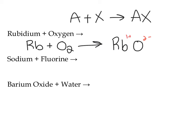So I want to cross those charges: that two goes down here, and that one goes over here. I don't need to write the one, and that's my formula. Now once I have the formulas written, I just want to balance the equation. I have one rubidium and two rubidiums, and two oxygens and one oxygen, so I put a two there to take care of the oxygens and a four there to take care of my rubidiums.